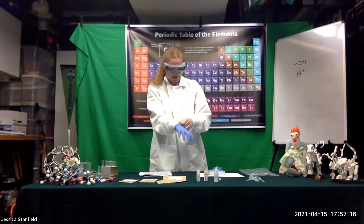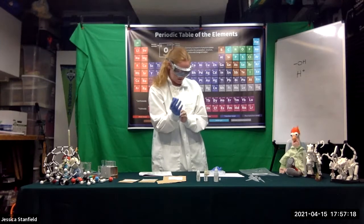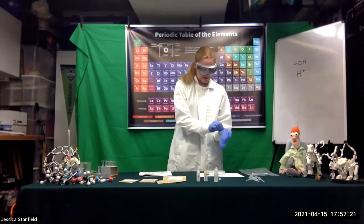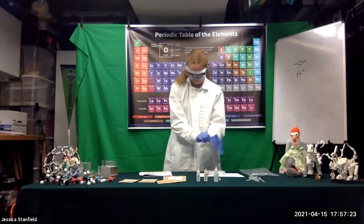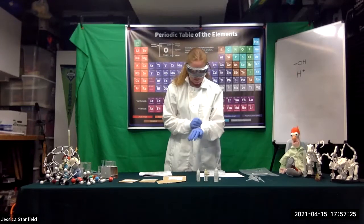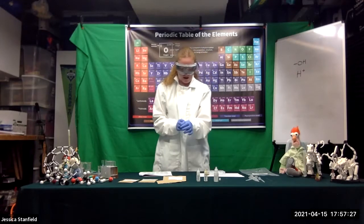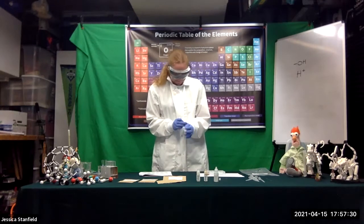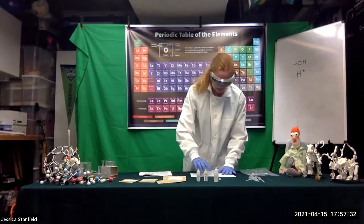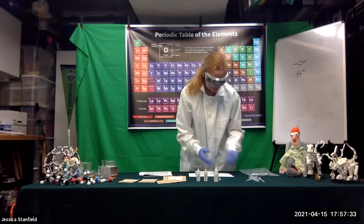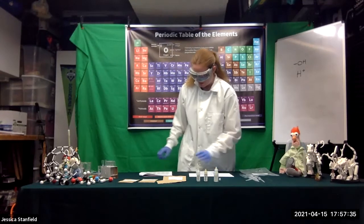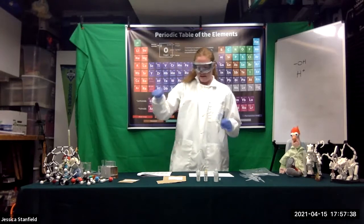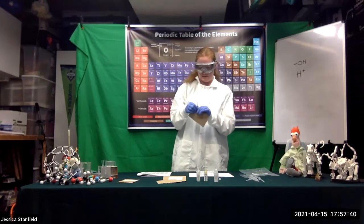Okay, so we're going to first look at our known compounds. In our first two wells, we're going to add the solid salicylic acid and solid acetylsalicylic acid. I'm going to shake down my envelopes and tear them open. I'm going to use my spoon to get out one mini spoon of the salicylic acid and put that in well A1.